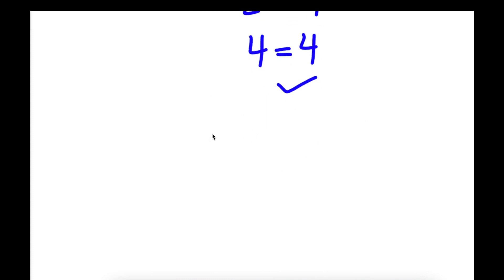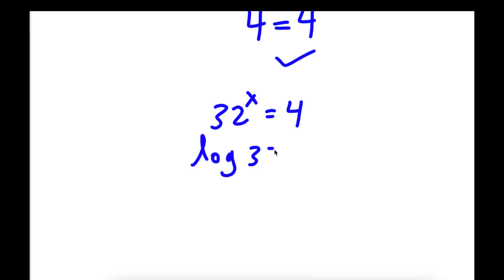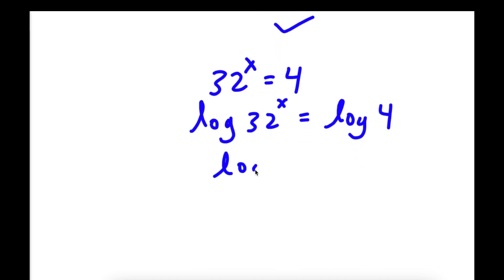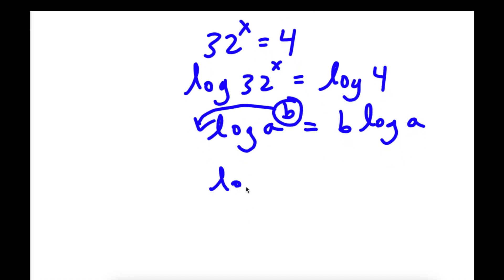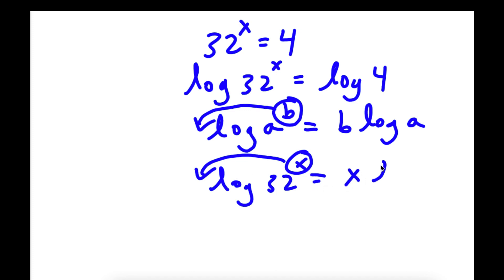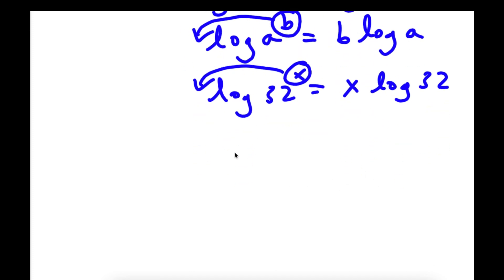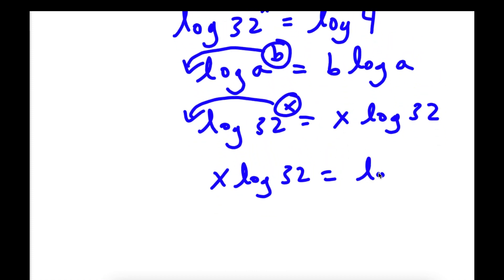Now another simpler way of doing this is to take the log on both sides. So I have log 32 to the power of x is equal to log 4. An important property of logarithms is that if I have something in the form log a to the power of b, I can actually move this exponent to the front of the logarithm. So this is equal to b times log a. Now I'm going to do this with log 32 to the power of x — I'm going to move my exponent x to the front. So this is going to equal x times log 32.